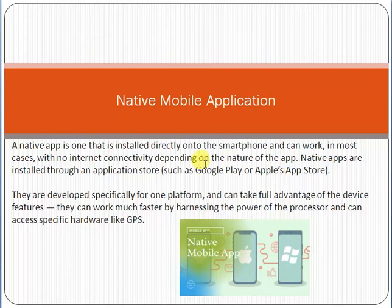They are developed specifically for one platform. For example, if you are working for Android, you can only make the application for Android. If you are making the application for iOS, it will be developed only for iOS. So native applications are made for only one platform, either Android or iOS.